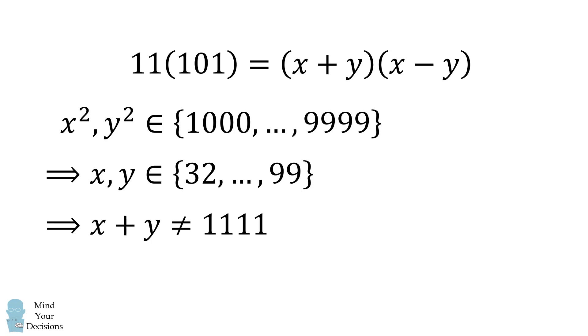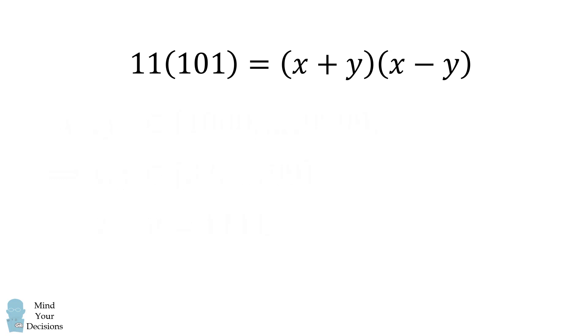This means x plus y cannot be equal to 1111. This is because x and y have a maximum value of 99. So, x plus y and x minus y are integer factors of 1111. 11 times 101 is the prime factorization. Therefore, x plus y must be the proper factor 101, and x minus y will be the factor of 11.